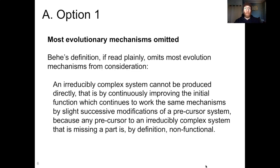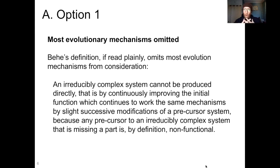Option one: most evolutionary mechanisms are omitted from Behe's argument. Behe's definition, if you just read it plainly, omits most evolutionary mechanisms from consideration in terms of being able to build a complex biological system.